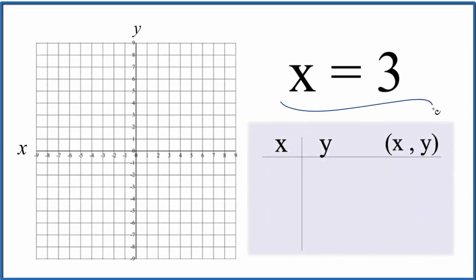Let's graph the equation for x equals 3. So if we look at this, when we have x equals some number, just a number like this here, it's going to be a vertical line.